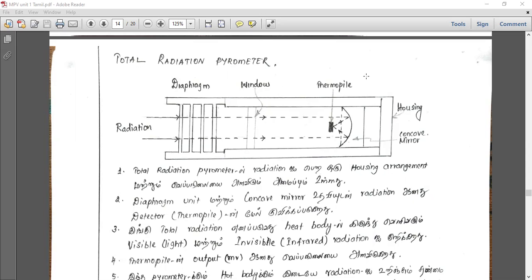The total radiation pyrometer has a sighting adjustment window and a concave mirror. The concave mirror focuses the radiation and we measure the heat.